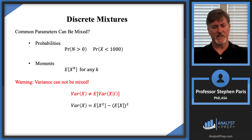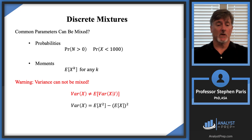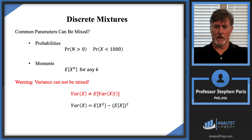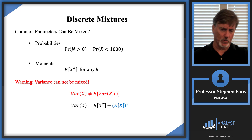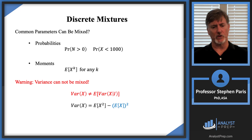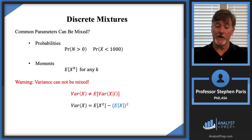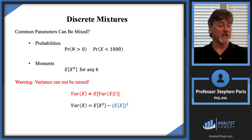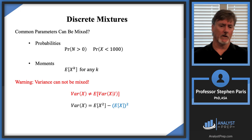Here's why variances can't be mixed. The second moment — the first term on the right — can be mixed. But look at the second term: what's in parentheses is E[X], which can be mixed, but because it's being squared, that throws everything off. Because the first moment is being squared, that's what disallows mixing variances. You can't mix the square of the first moment.